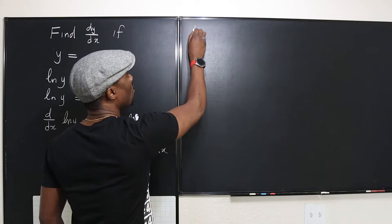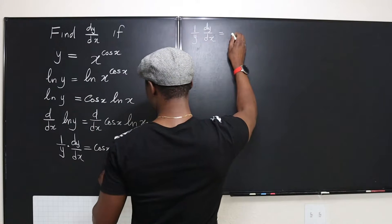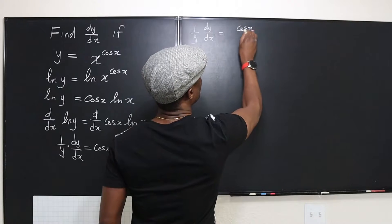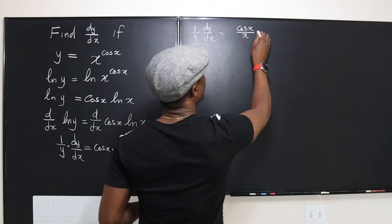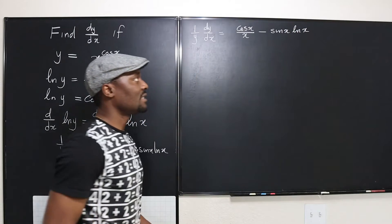So what we're going to have here will be 1 over y dy/dx will be equal to cosine x over x minus sine x ln of x. That's what we've got.